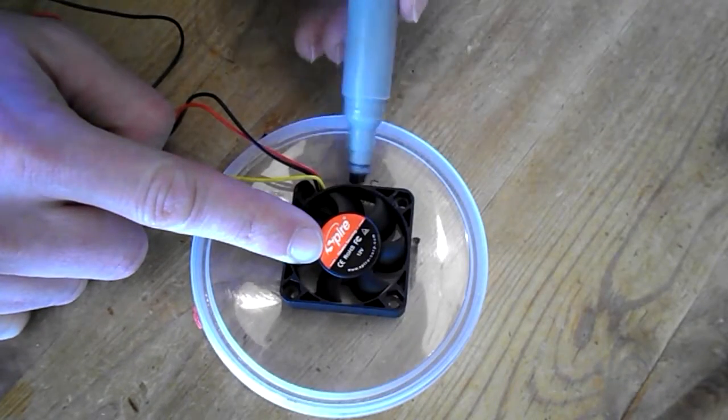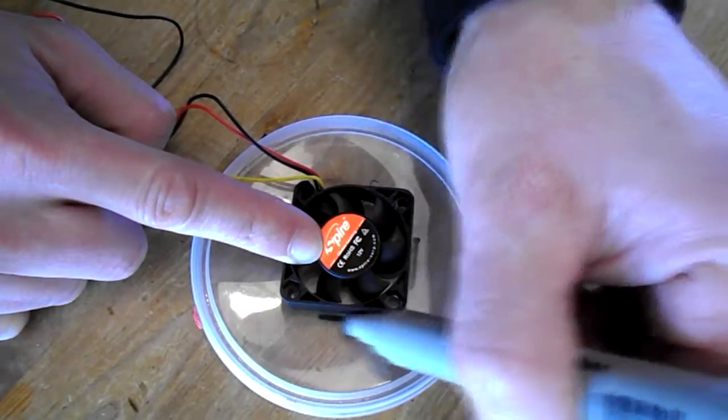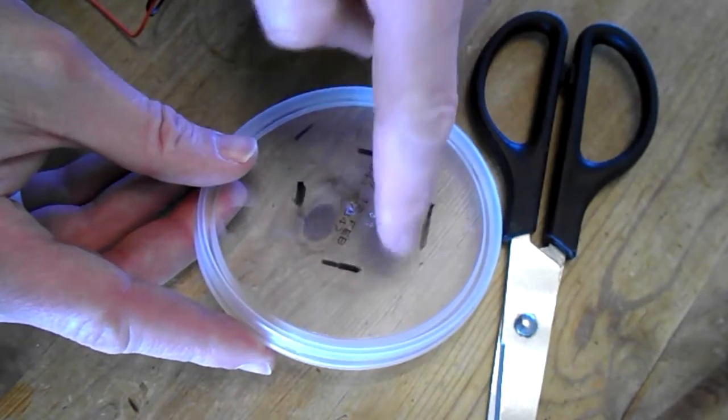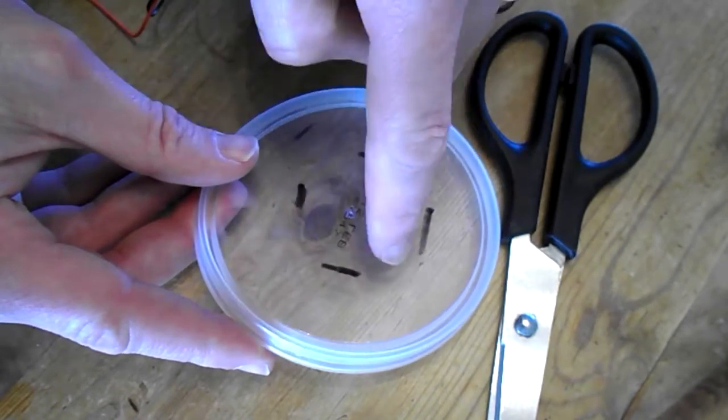Now you're going to mark out a hole for the fan. When we cut the hole, it needs to be slightly smaller than the fan, or it will fall through.